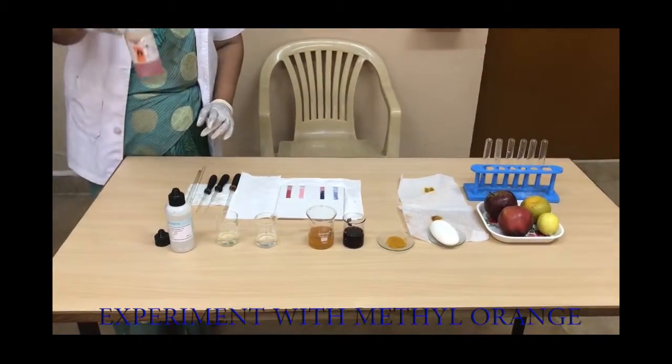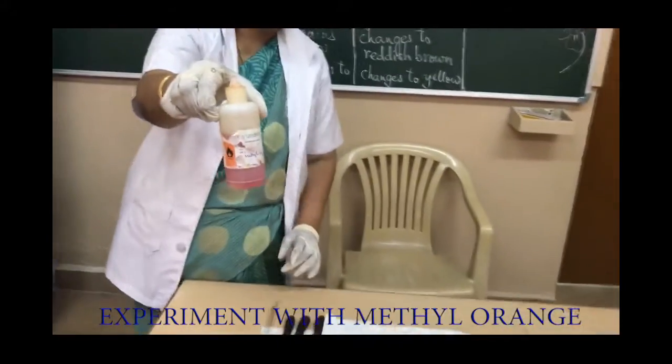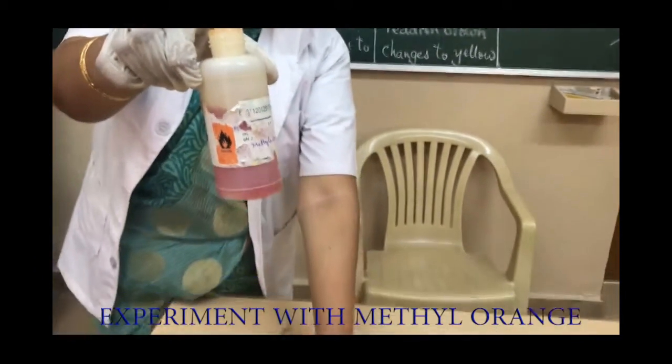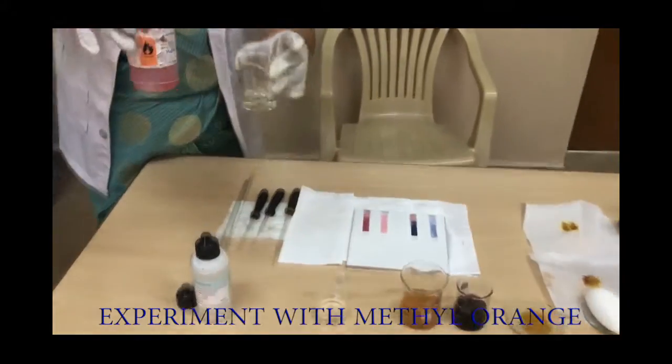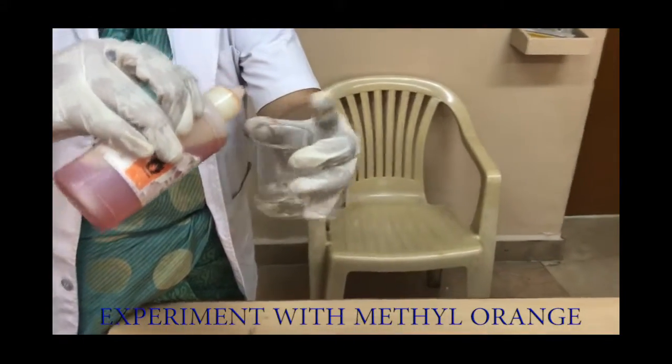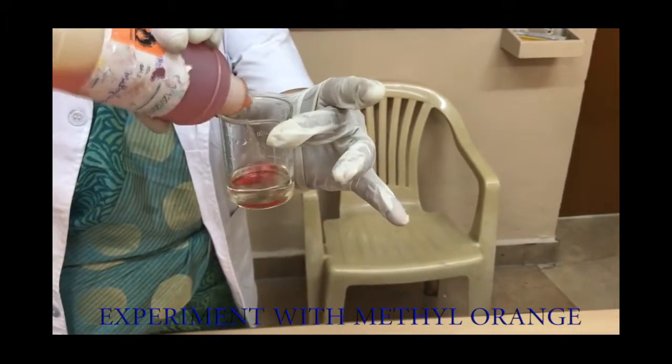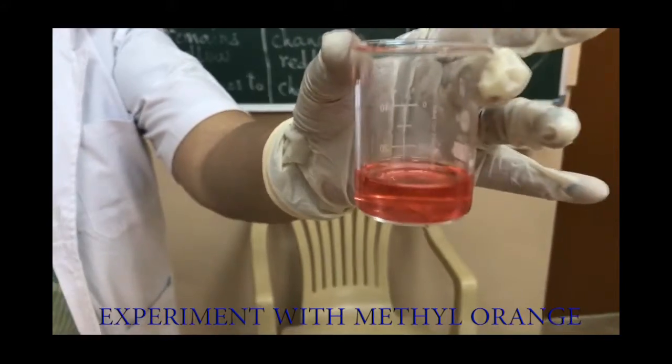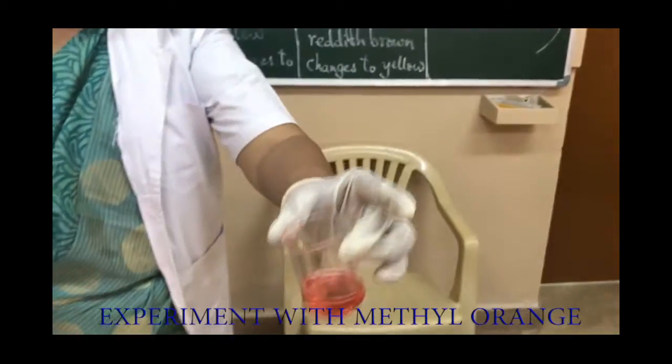Now let's take another indicator, methyl orange. Add a few drops of methyl orange to it. Now see the color change to red. It shows the presence of an acid in it.